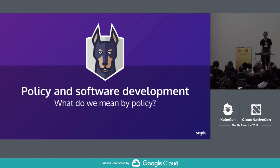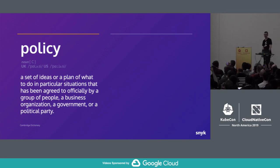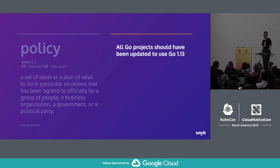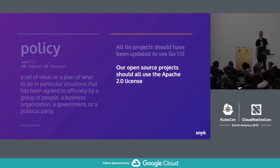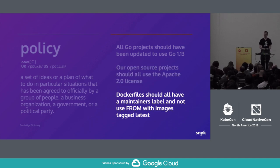So what do we mean by policy? Starting with a dictionary definition: a set of ideas or a plan of what to do in a particular situation that has been agreed to officially by a group of people, a business organization, government, or political party. Here we're mainly talking about the more senior people in your organization going into a room and deciding on certain things that you do or don't do.